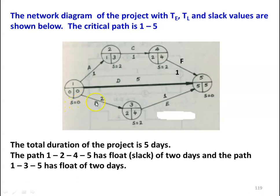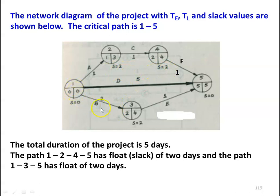The slack values are: S equal to 0 for the first event, S equal to 2 for the second event, S equal to 2 for the fourth event, S equal to 2 for the third event, and S equal to 0 for the fifth event. The critical path is 1-5 with a total duration of 5 days. The path 1-2-4-5 has a float of 2 days, and the path 1-3-5 also has a float of 2 days.